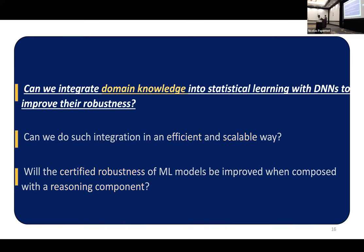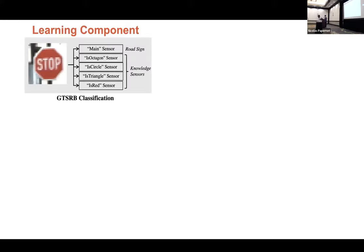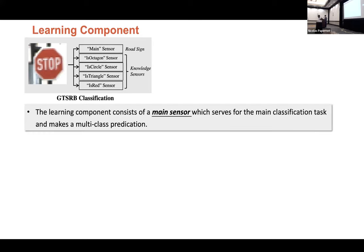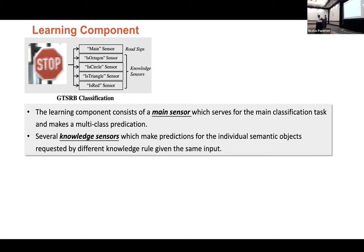So now let's focus on the first question on how to integrate the terminology. First, we will have a learning component. Something like that takes a stop sign as example. We will have a main sensor, which serves for some main classification task. For example, the main sensor will be responsible for classifying different types of road signs. And as a second component, we have several knowledge sensors, and it will make predictions for individual semantic objects. For example, we can train one sensor for predicting if it is octagon, we can also train another sensor for predicting if it is triangle. And in practice, some sensors will be attacked and we wanted to recover it.